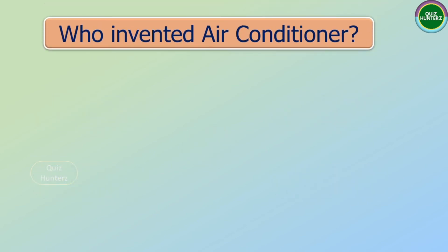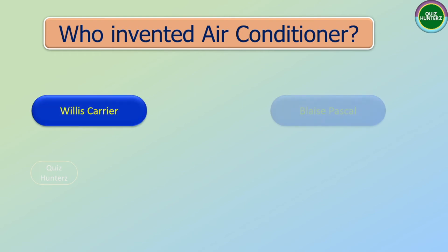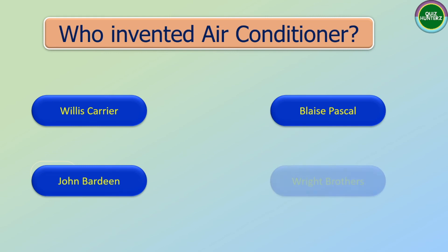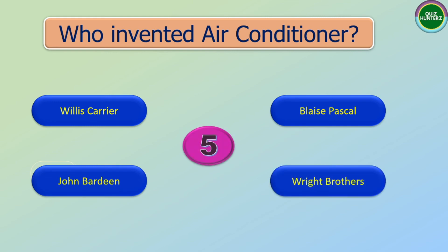Next question: Who invented air conditioning? The options are: Willis Carrier, Blaise Pascal, John Baird, Wright Brothers. And the correct answer is Willis Carrier.